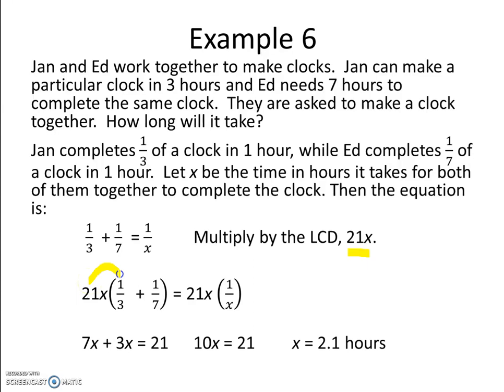we have 21x times 1 third gives us 7x. 21x times 1 seventh is 3x. And 21x times 1 over x is simply 21.